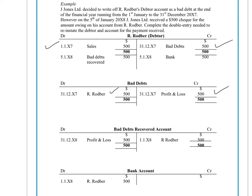The happy news is that Rodber on the 5th of January 2008 decided that he was actually going to write a cheque for $500 and pay back J. Jones Limited.